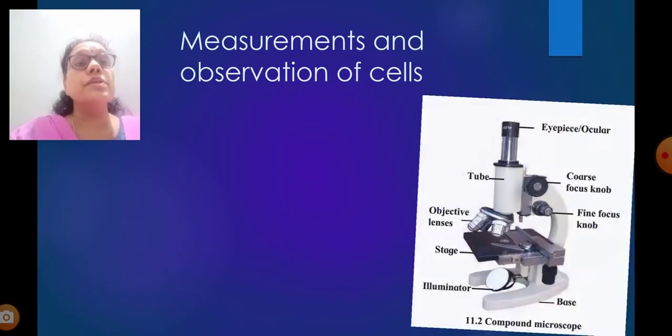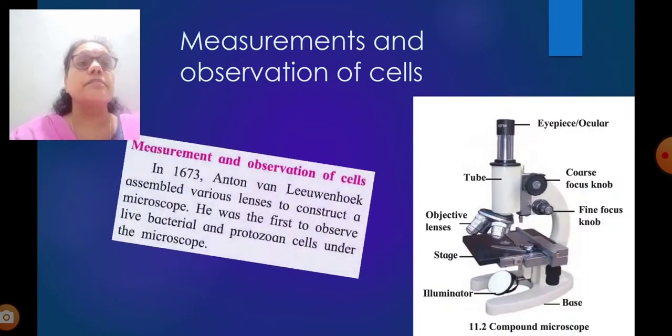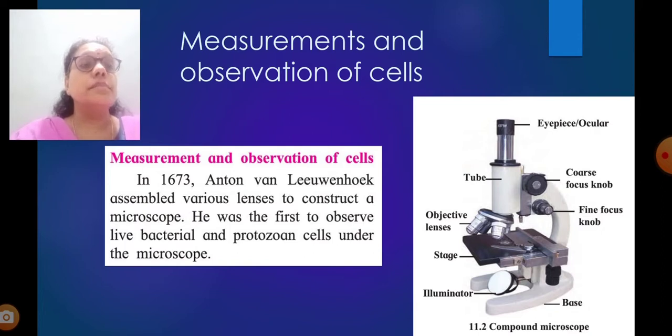Measurements and observation of cells. This picture you will be familiar. In our lab, this is there. This is a microscope, a compound microscope. You can see the eyepiece, coarse focus knob, fine focus knob, objective lens through which we can observe the microbes, then illuminator. These are the parts of microscope.